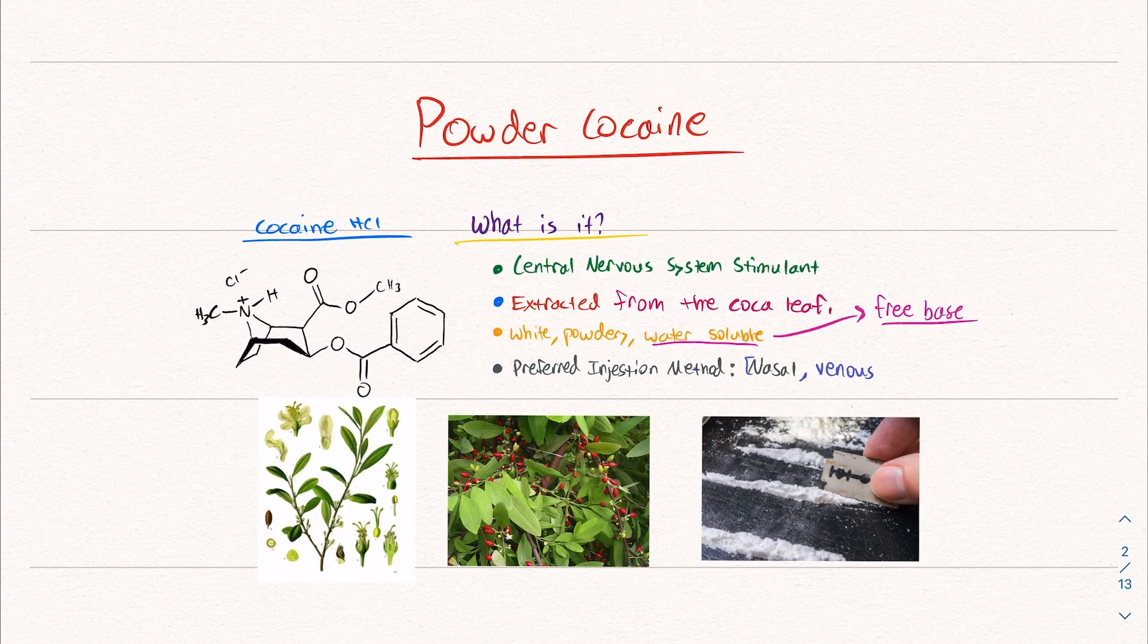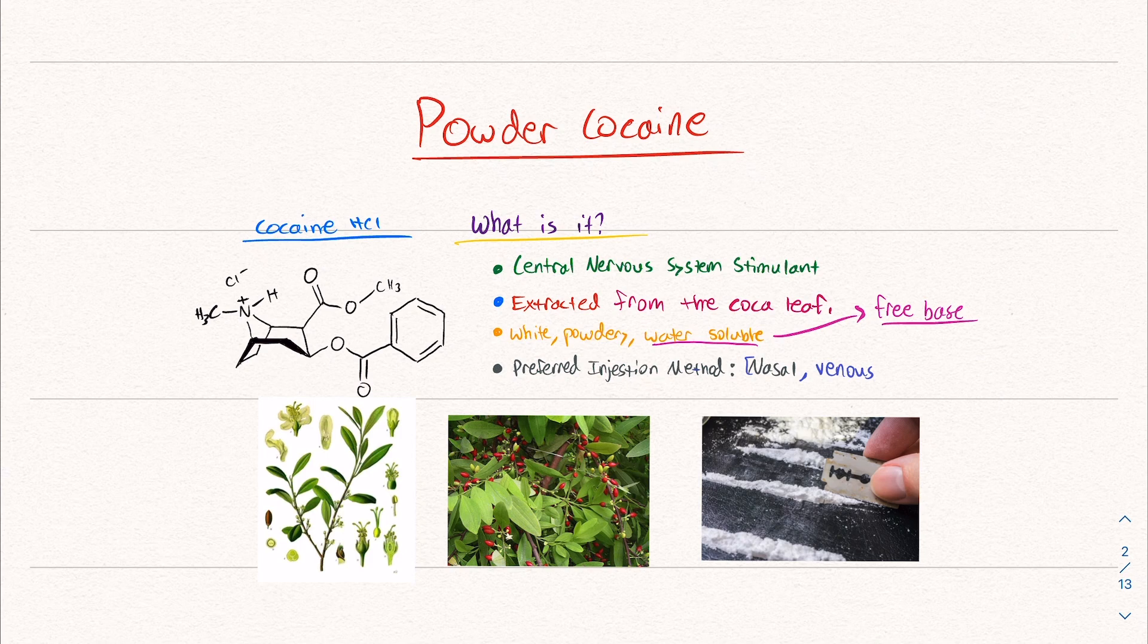Before I talk about freebasing, we're going to do a little intro into cocaine. I will make a video on cocaine because it's a really interesting topic and it deserves a longer discussion. So what is it? A lot of us think of powder cocaine and that is cocaine hydrochloride. It is a central nervous system stimulant extracted from the coca leaf. It's white, powdery, and also water soluble. Now this is a really important piece when we're talking about freebasing or crack cocaine.